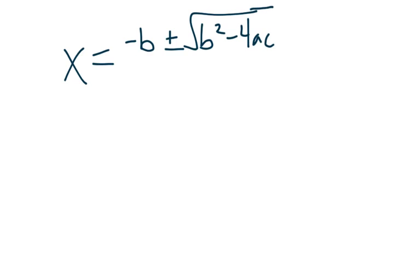The discriminant is a derivative of the quadratic formula. So the quadratic formula is the solution for the x-intercepts: x equals negative b plus or minus the square root of b squared minus 4ac all over 2a. The discriminant is just a component of the quadratic formula. It's this part right here, more specifically, the b squared minus 4ac.